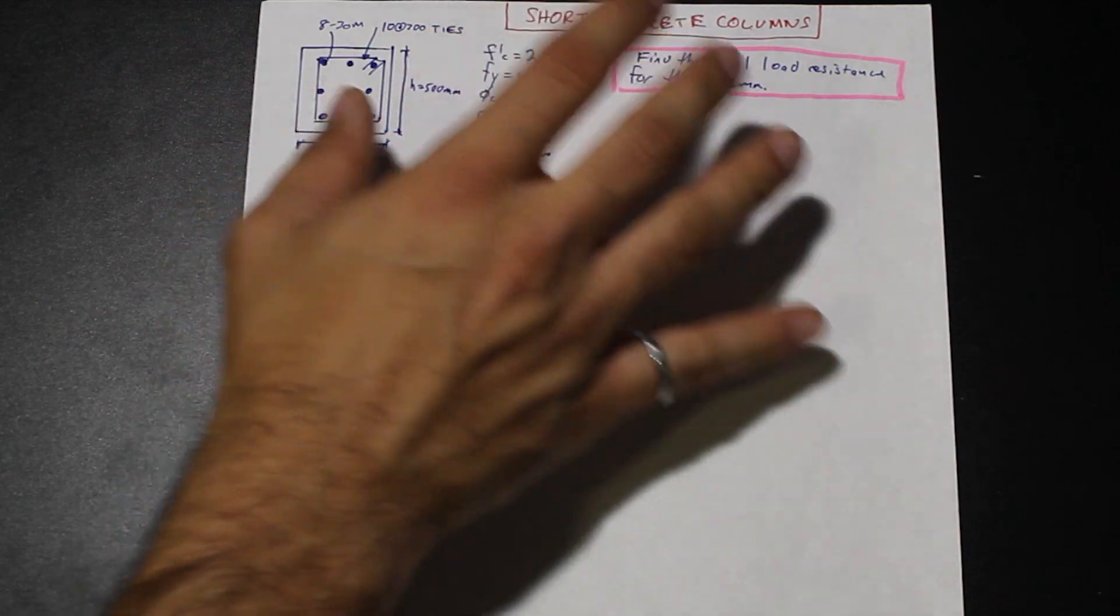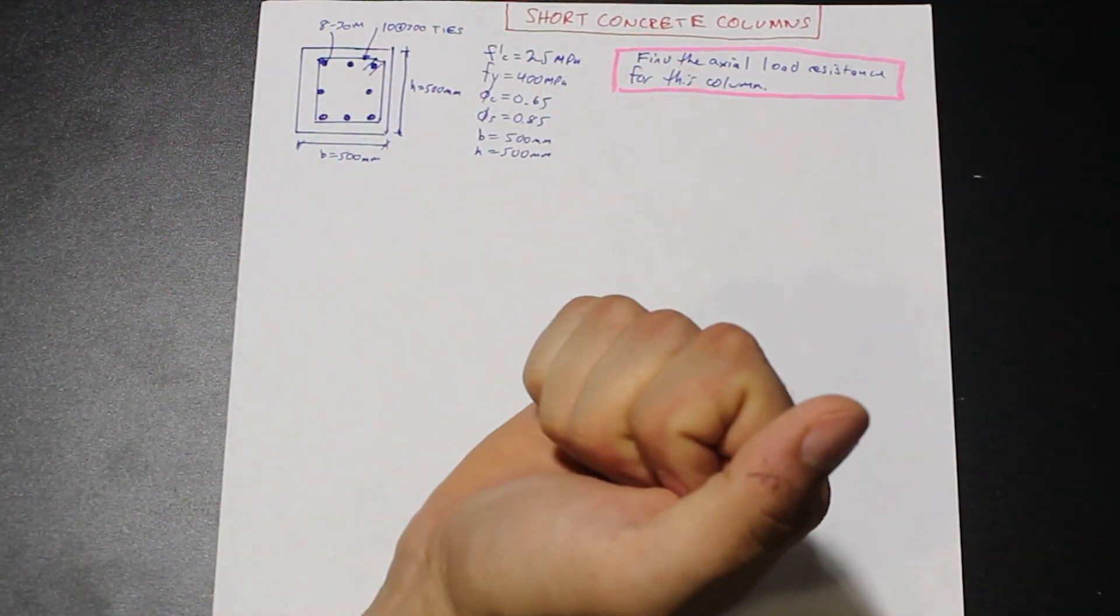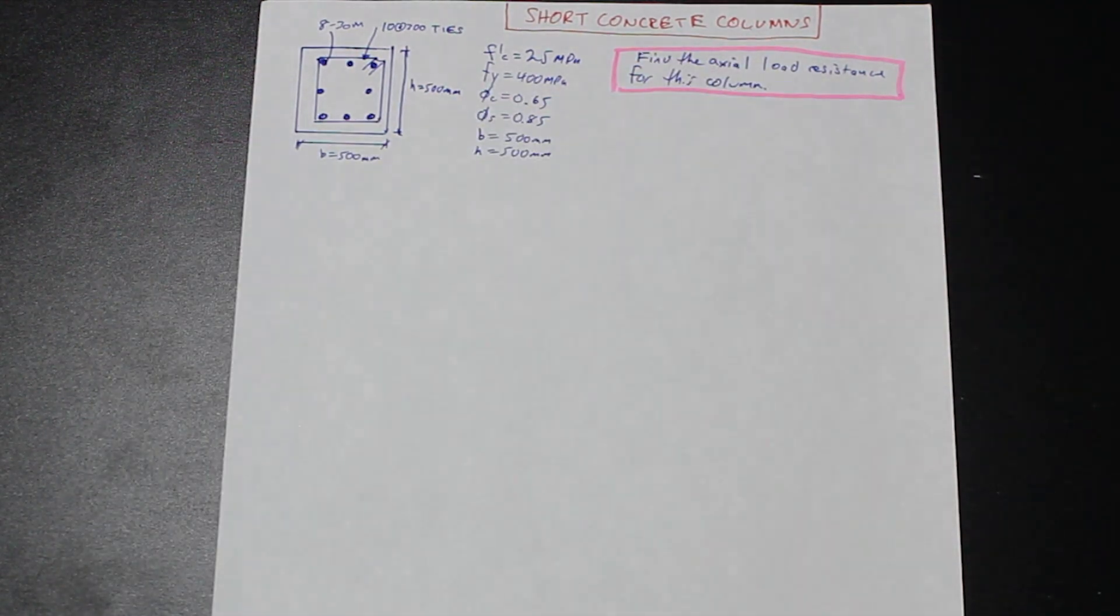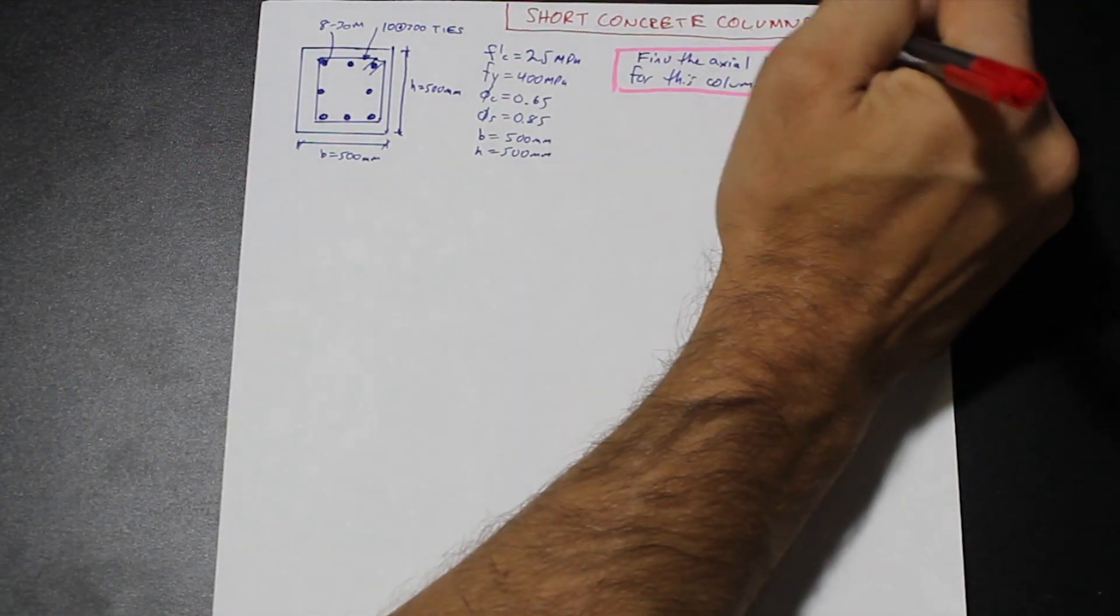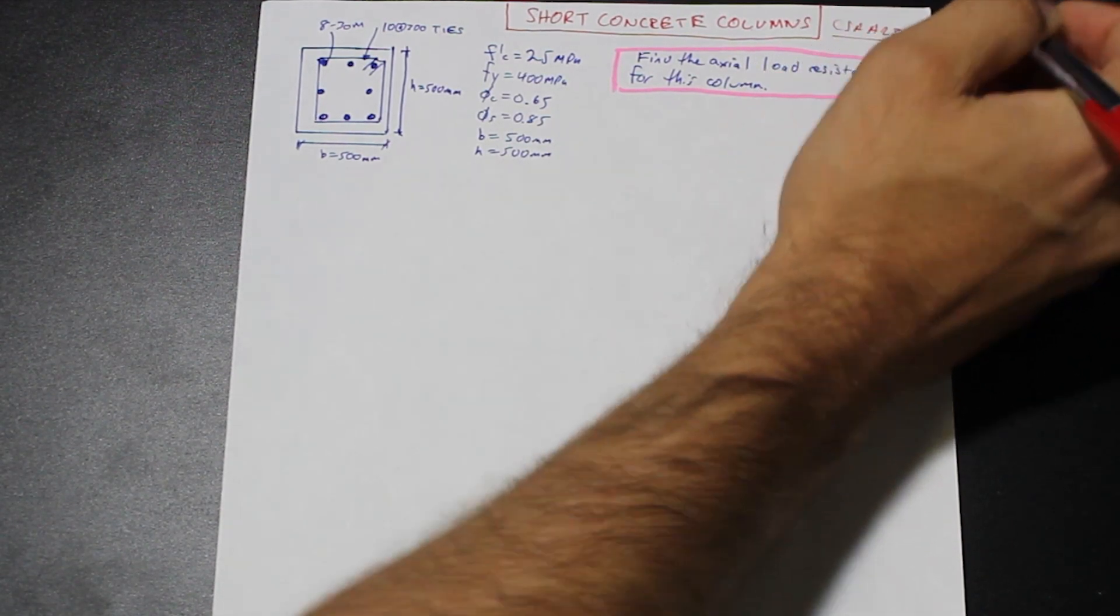So right here we have a short concrete column that's tied, it's reinforced, and we're asked to find the axial load resistance for this column. So we're going to do that according to CSA A23-3. So we're going to do the Canadian code.